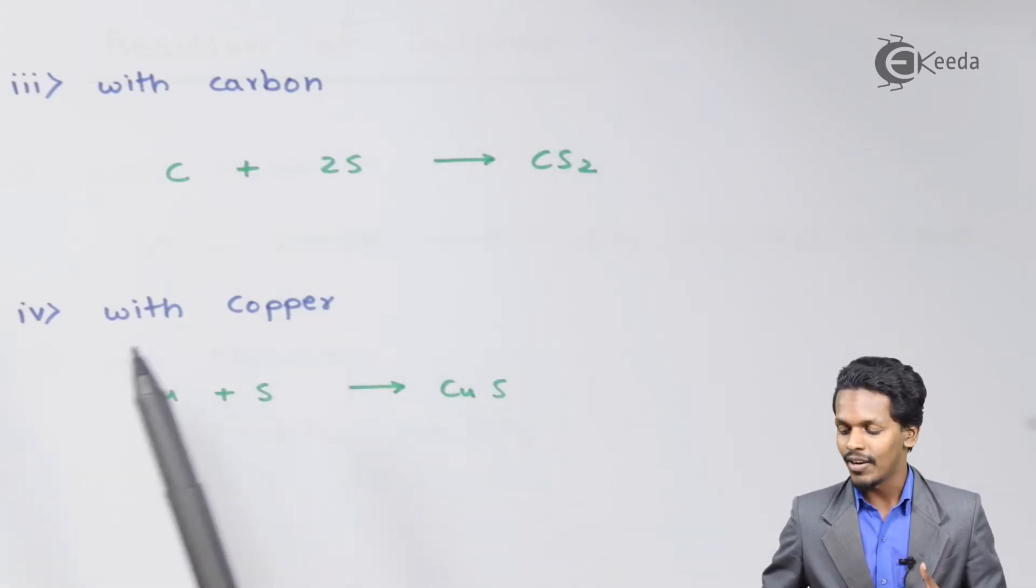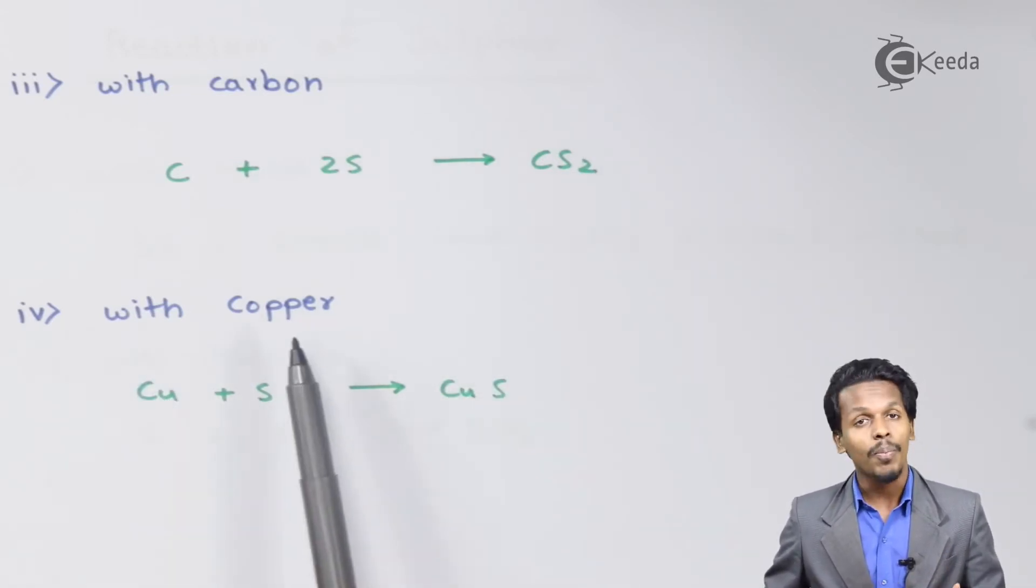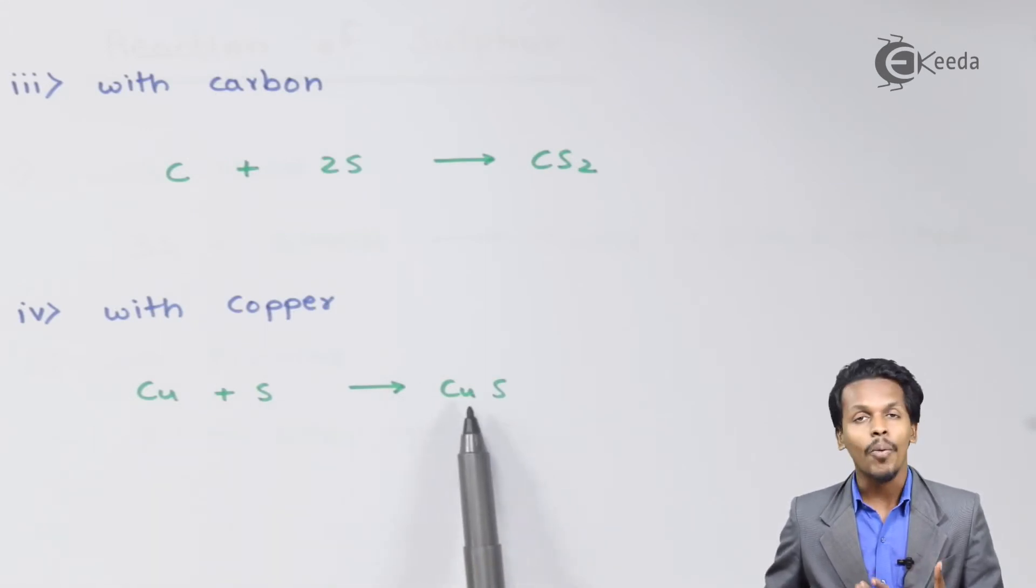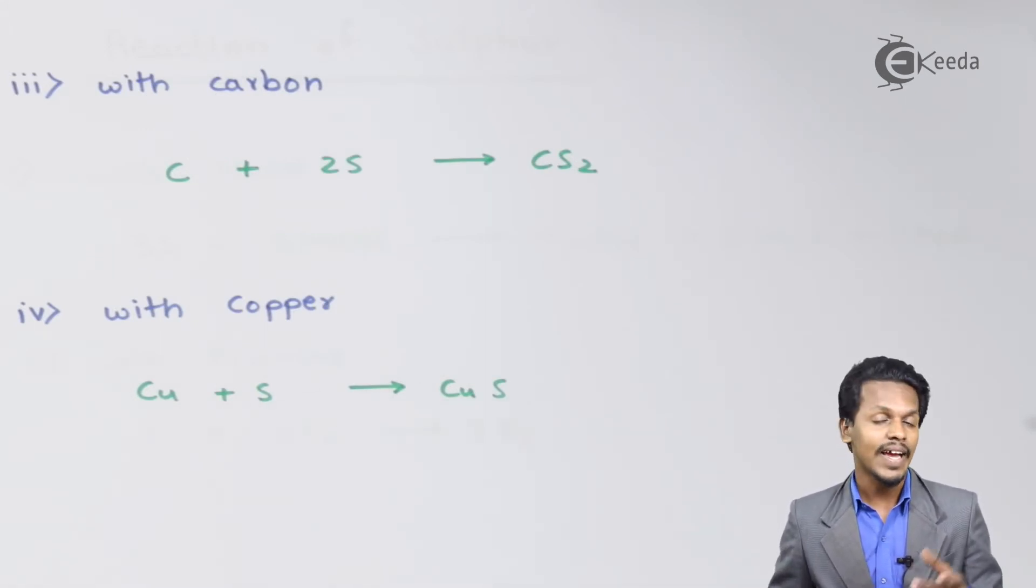And talking about the next one, that is with Copper. So the reaction of Copper with Sulphur gives us Copper Sulphide, and that also requires a higher temperature and critical conditions.